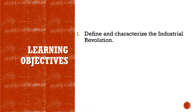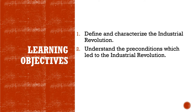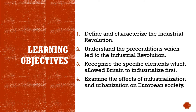The learning objectives for this unit are: first, define and characterize the Industrial Revolution. Number two, understand the preconditions which led to the Industrial Revolution. Number three, recognize the specific elements which allowed Britain to industrialize first. And finally, examine the effects of industrialization and urbanization on European society.